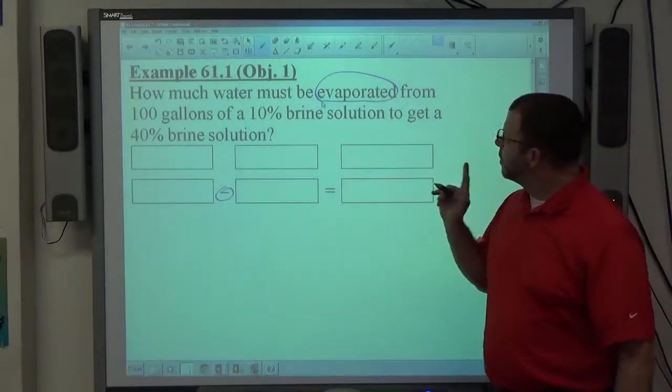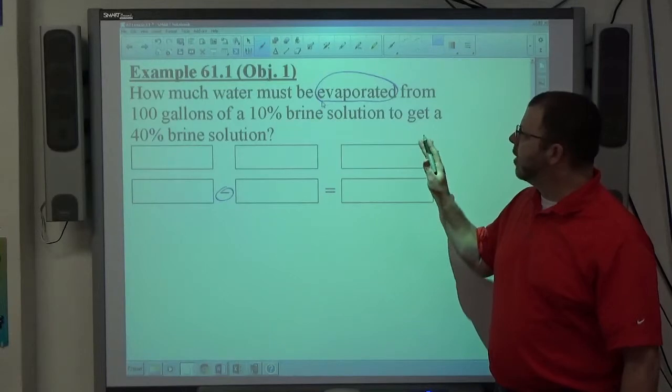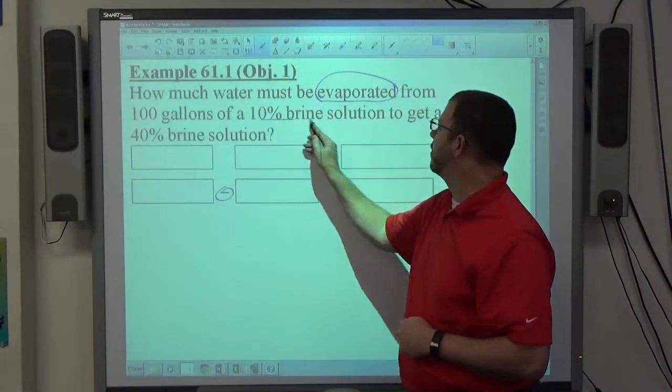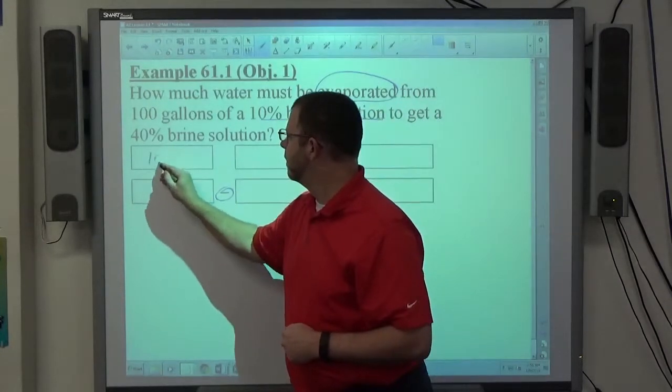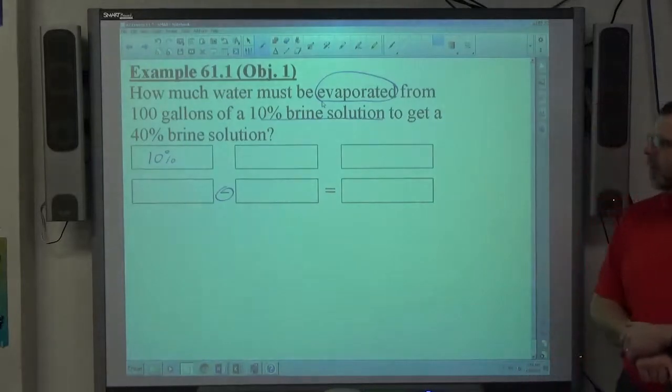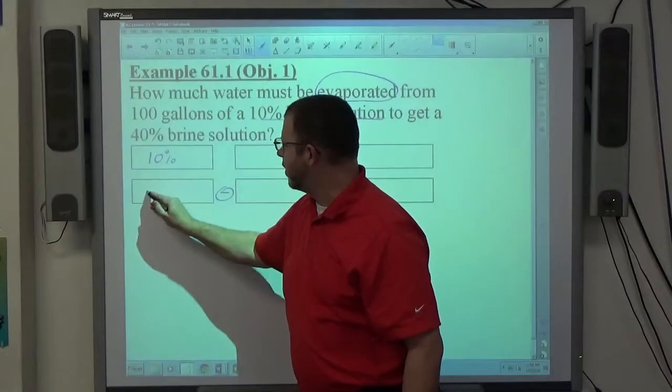All right, so what we're starting off with, anytime you're evaporating, you're going to start off with something. Okay, so we're starting off with a 10% brine solution, and we have 100 gallons of it.